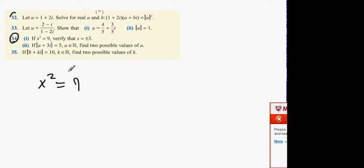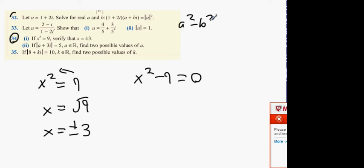First way is to square root both sides, and you remember when you square root something, you have to have the plus and the minus answer. That's one way. Second way is to bring the 9 over the other side and you get x squared minus 9. And you'll remember from your junior cert, a squared minus b squared is a plus b times a minus b.